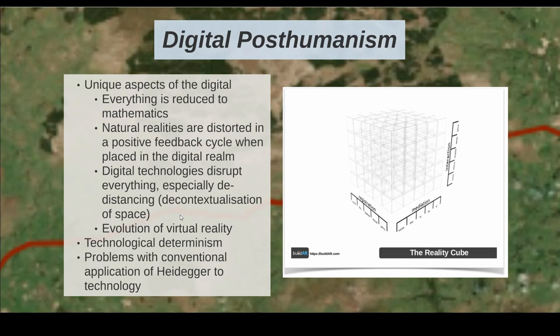Some of this critique is a little obvious, but it is what it is. The digital realm is made up entirely in numbers, and this in itself helps digital technologies disrupt and subvert every aspect of humanity, particularly in the phenomenological perspectives. Within the digital itself, being is reduced to a systematic process, and we can control these processes, and natural realities are distorted in a positive feedback cycle when placed within the digital realm — which I call the Photoshop effect. Technology has started to decontextualize space, but the digital media go further by decontextualizing just about everything.